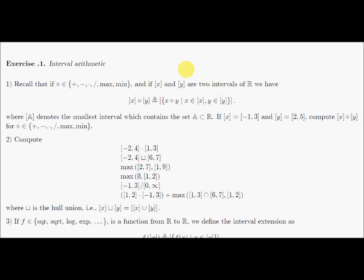Interval arithmetic. If I have two intervals x and y and a binary operator, which can be plus, minus, and so on, then I will define the operation with respect to this operator as follows. I take all possibilities for x operator y such that x and y belong to their domains. Because this set may not be an interval, I will take the smallest box which encloses this set — the smallest interval. That's why I define this operator which denotes the smallest interval which contains a subset of R.